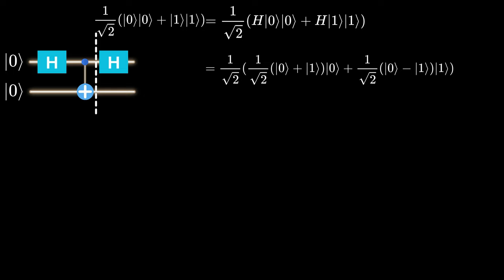But Hadamard gate on 0 is 1 over square root of 2, 0 plus 1, and Hadamard gate on 1 is 1 over square root of 2, 0 minus 1.